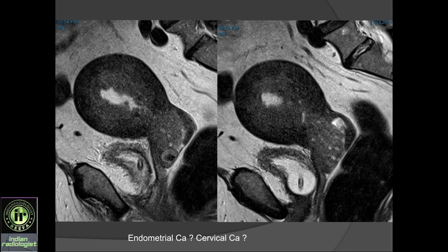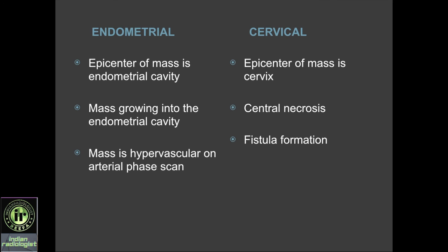Sometimes we see tumors from the endometrium extending down to the cervix, causing a bulky cervical mass. It's important to distinguish whether it is primarily endometrial cancer or primarily cervical cancer, as management is very different. If the bulk of tumor is centered in the cervix, it is going to be cervical cancer; if the bulk is in the endometrium, it is going to be endometrial cancer. Also, endometrial cancers tend to distend the endometrial cavity, whereas cervical cancers might just extend upwards but not distend. In worst-case scenarios, biopsy will be helpful.